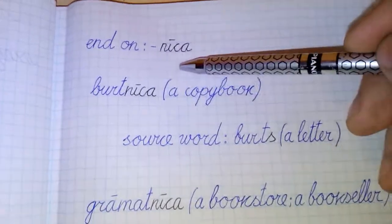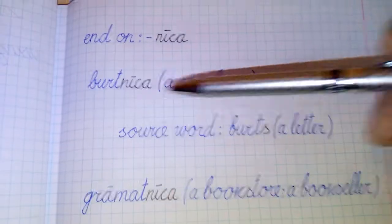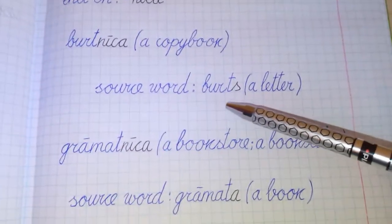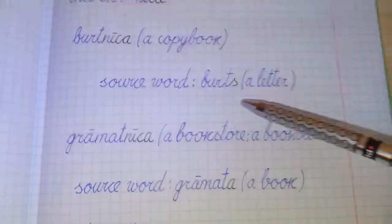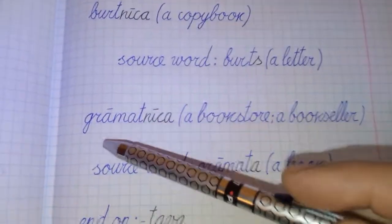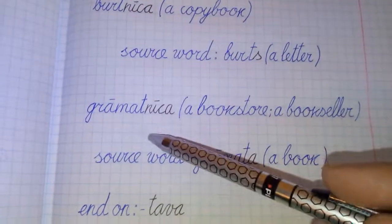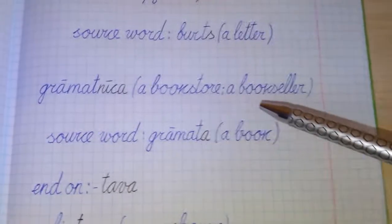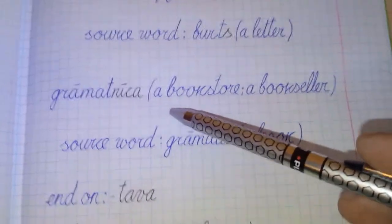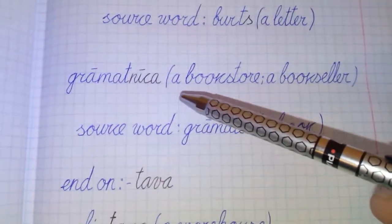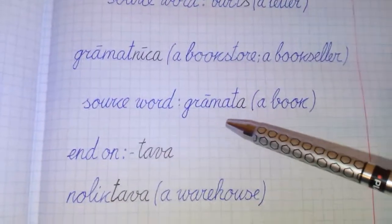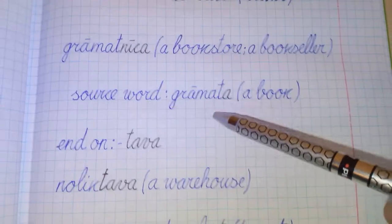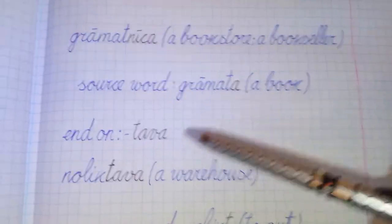Ending -nīca. For example, Burtnīca, a copybook. Source word is burts, a letter or character. Next, grāmatnīca, a bookstore or bookseller. The word means a bookstore. Source word grāmata, feminine gender, a book.